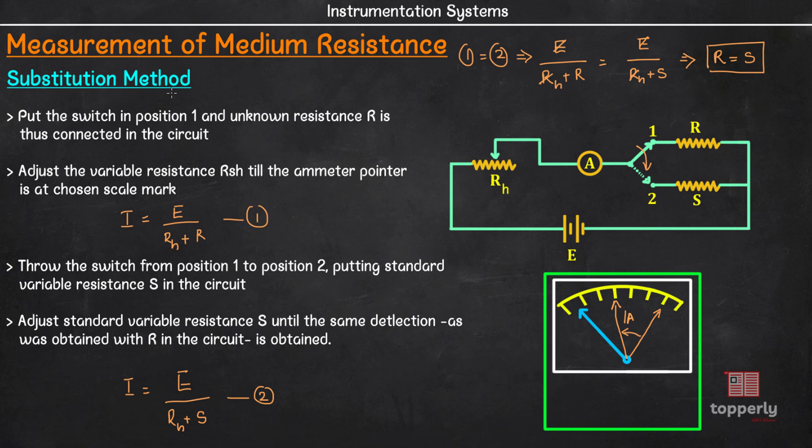Now this substitution method is more accurate than ammeter-voltmeter method. This is because, the ammeter-voltmeter method assumes that the ammeter has zero resistance and voltmeter has infinite resistance. But practically this is not the case. Also there is the problem of lead and contact resistances when it comes to ammeter-voltmeter method. However, all these are not a problem when it comes to the case of substitution method.